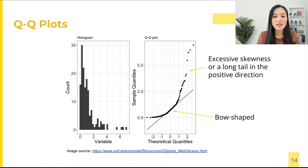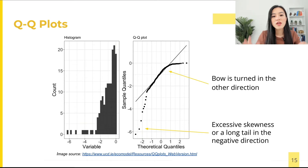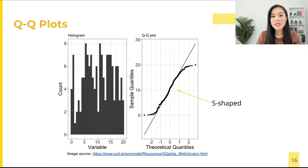In this plot, the residuals have a bow-shaped pattern. The deviations from the diagonal line indicate that the residuals have excessive skewness — they are not symmetrically distributed and have too many large errors in the positive direction, making for a long tail. In the next plot, there's excessive skewness or a long tail in the negative direction, with the bow turned in the other direction.